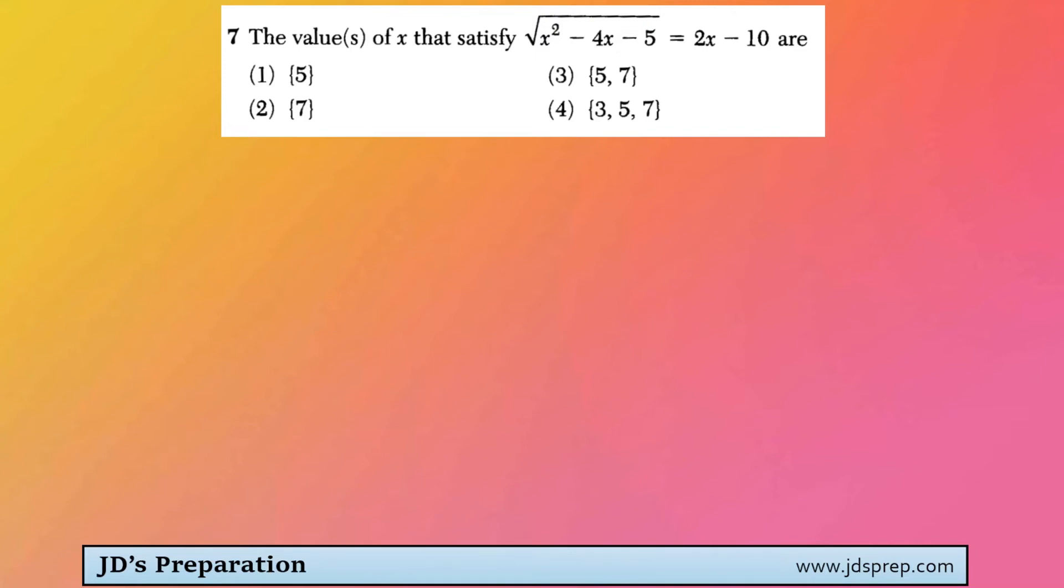The first step to solving this equation would be to square both sides, and by doing that we are getting rid of that radical. So we'll be left with x squared minus 4x minus 5 on the left-hand side.